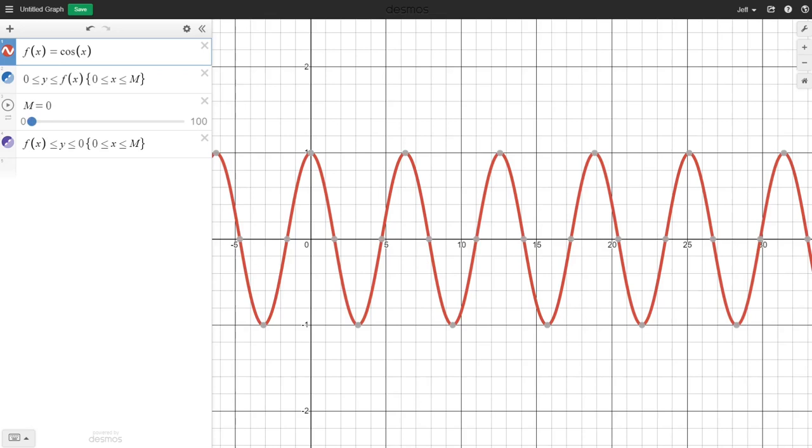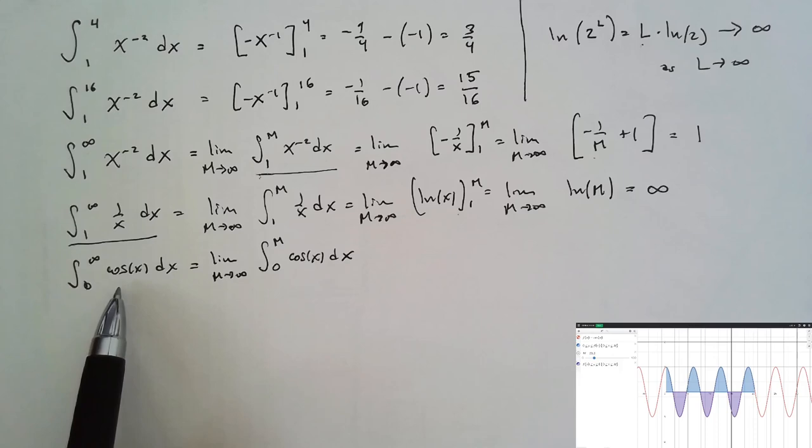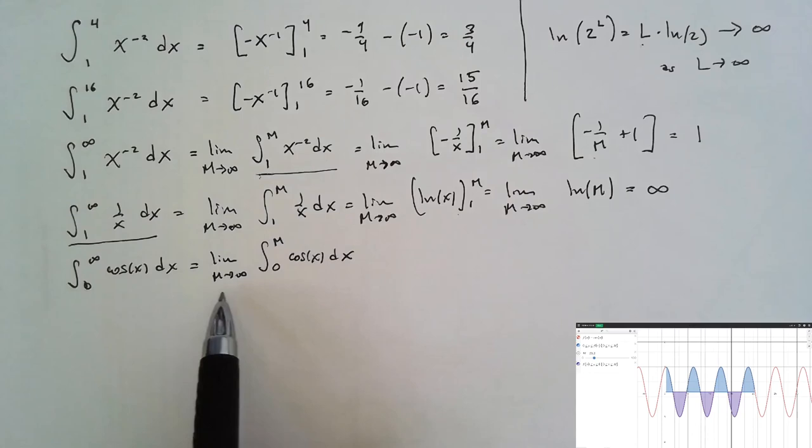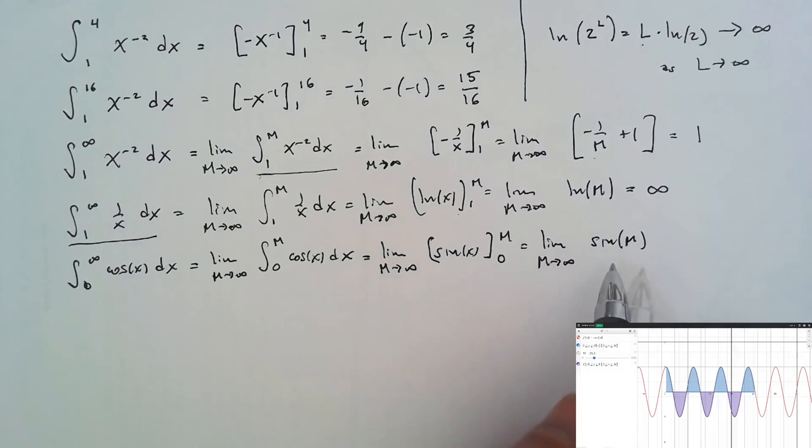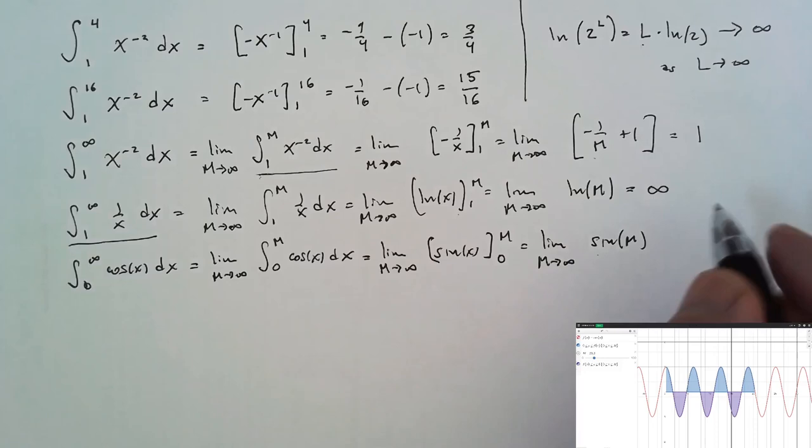So if we try to evaluate this improper integral of cosine of x from 0 to infinity, we again replace the upper endpoint of integration with a massive number m. Here, sine of 0 is 0, and if we examine sine of m as m tends to infinity, this approaches no limit at all. The sine function keeps oscillating between negative 1 and 1, so this limit does not exist. Again, we say that this improper integral diverges.